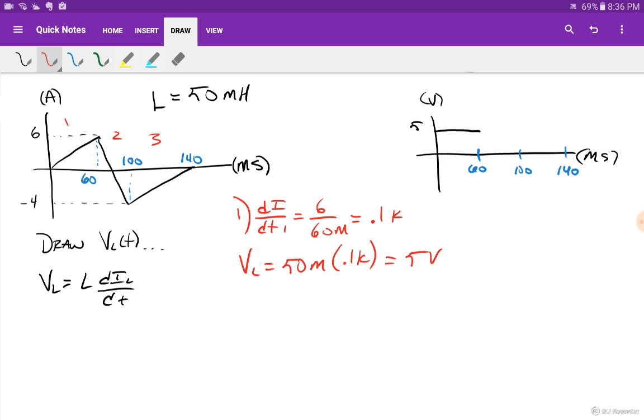Let's look at the second leg. The derivative of this is still going to be my slope. My slope is going to be 6 to negative 4, that's a drop of negative 10 over, and that's going to be from 60 to 100, that's 40 milliseconds. So I got negative 10 over 40, and that is going to give me 0.25 negative with a k at the front.